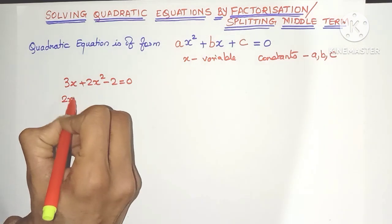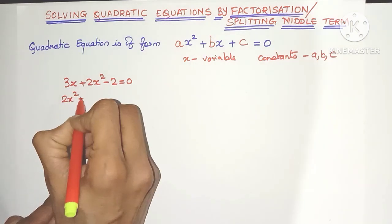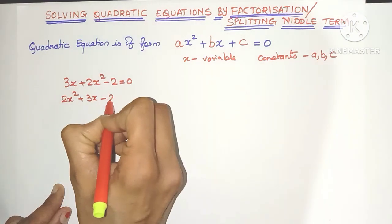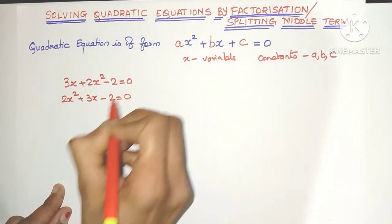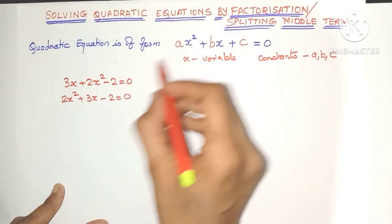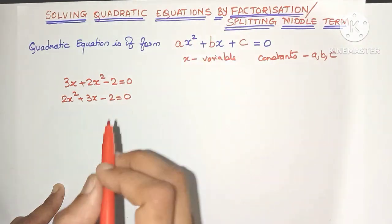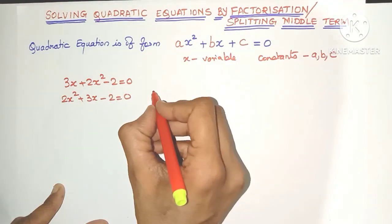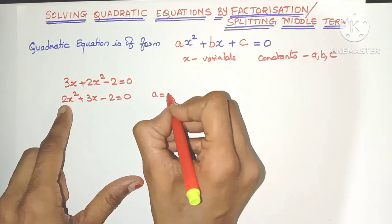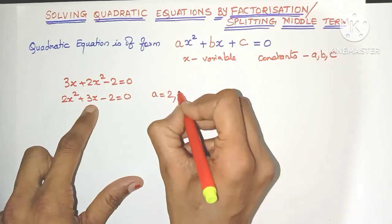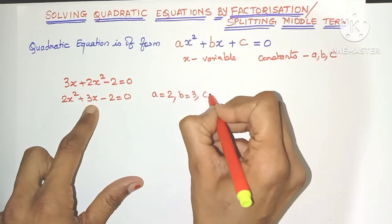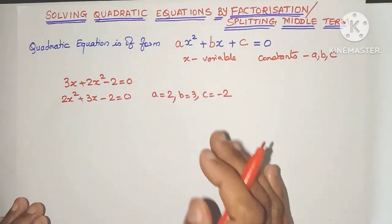First the x squared term should come, then the x term, then the constant. So comparing these two equations, what is the value of a? A will be 2, b will be 3 and c will be minus 2.